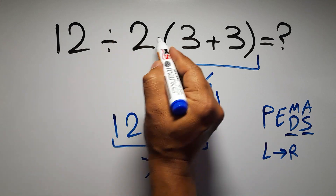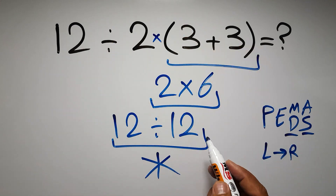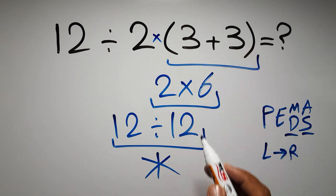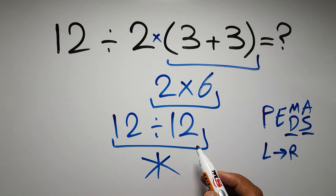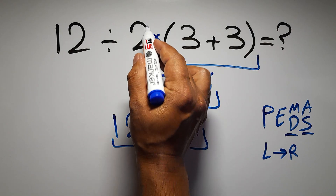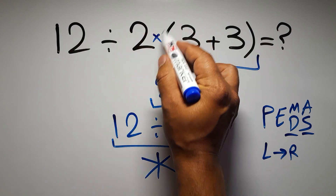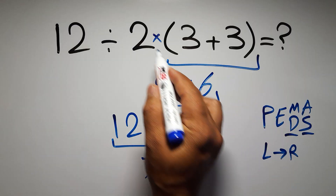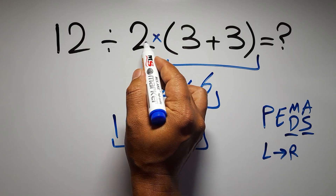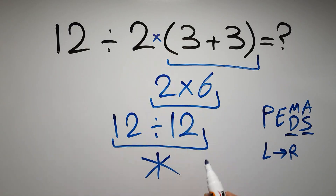In this expression, we have one division, one multiplication, and one parentheses. Inside these parentheses, we have one addition. Here we have a multiplication, because in mathematics, when a number is placed next to parentheses, it means multiplication, and we usually don't write the multiplication sign for brevity.